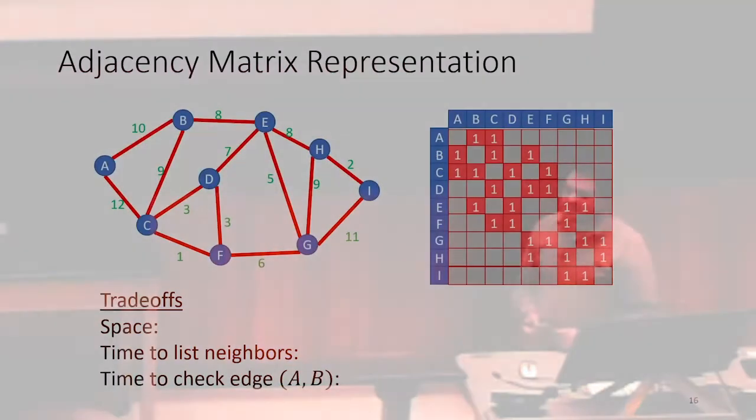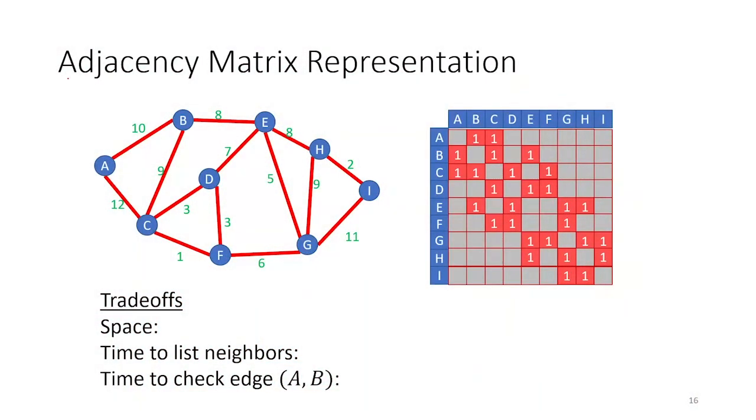We could also have this adjacency matrix representation of our graph, where this adjacency matrix representation says, I'm going to have this big table where there's going to be a row and a column for every node in this graph. And I'm going to write a one in every cell that represents an edge that exists. So here I have an edge from A to B, so the cell AB has a one in it. And then zeros are going every place else. I left those out just so that it was more readable.